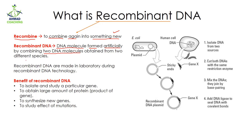These two DNA molecules are obtained from two different species. For example, this is one DNA molecule and this is another DNA molecule — one comes from one species and the other from another species. When you combine these two molecules, the new DNA molecule you get is known as recombinant DNA.